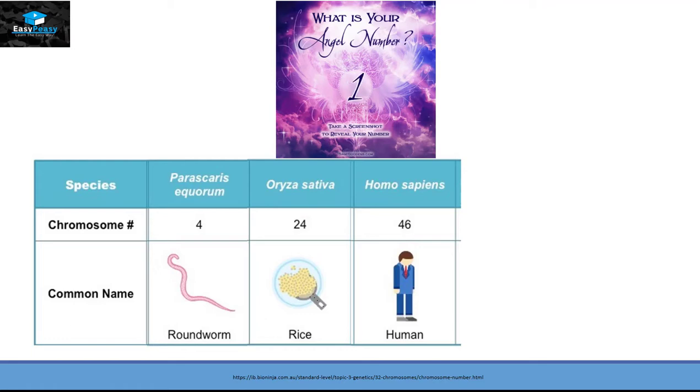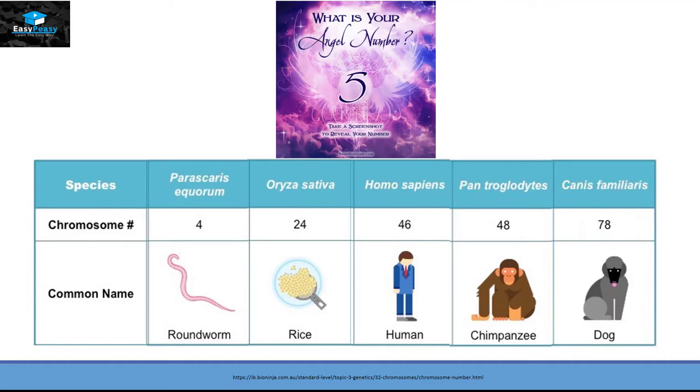Humans have 46 chromosomes, chimpanzees have 48, and dogs have 78 chromosomes.